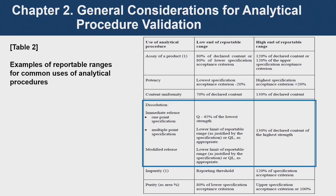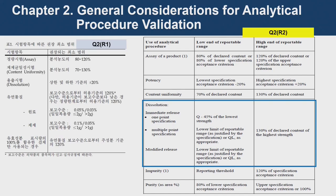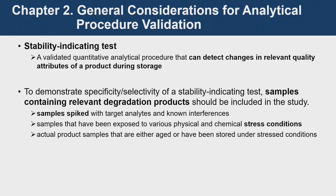About the dissolution test — the testing points could be multiple. The dissolution test points have been included as part of the dissolution test details. Here you can see the comparison between R1 of Q2 and R2 of Q2. About a stability indicating test, this is a validated quantitative analytical procedure that can detect changes in relevant quality attributes of a product during storage.